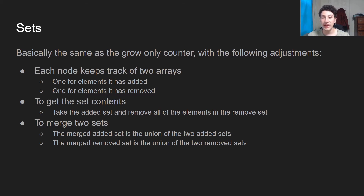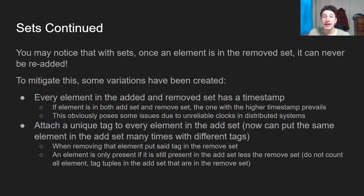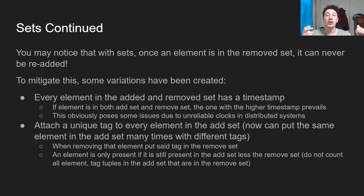One issue with this set approach is that once an element is in the remove array, it can no longer be in the set again. To mitigate this, some variations have been created. One approach gives every element in the added and removed set a timestamp — if an element in the added array has a more recent timestamp than the same element in the removed array, we can say that element was once again added. Another approach, avoiding the risk of unreliable clocks in distributed systems, is to attach a unique tag to every single element in the add set, and add that element-tag tuple into the remove set as well. If an element-tag combination is only in the add set but not the remove set, that element is still in the resulting CRDT.